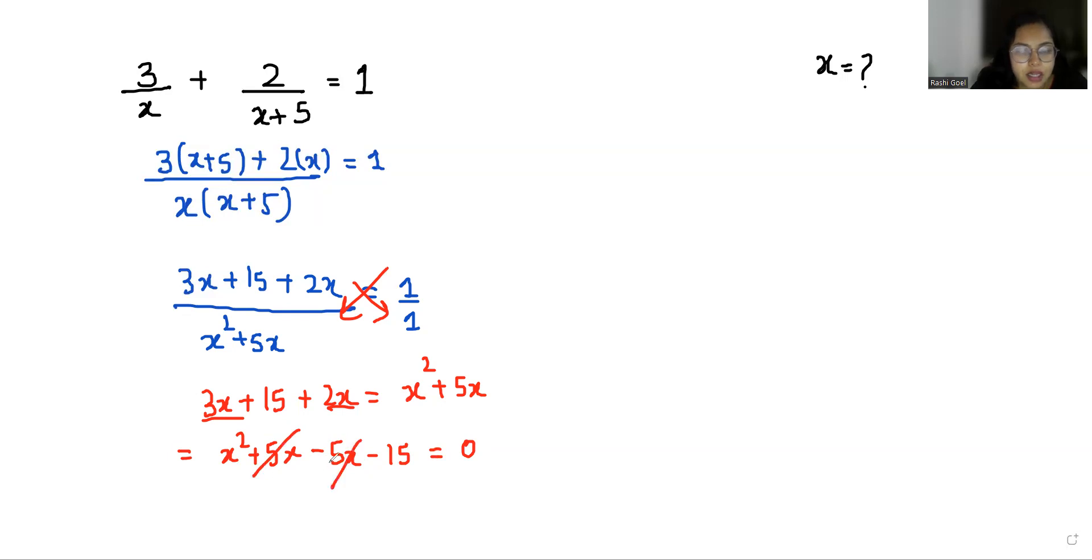So positive 5x cancels out the negative 5x. So x² - 15 = 0. x² = 15. x equals plus minus square root 15. The value of x is positive √15 and negative √15.